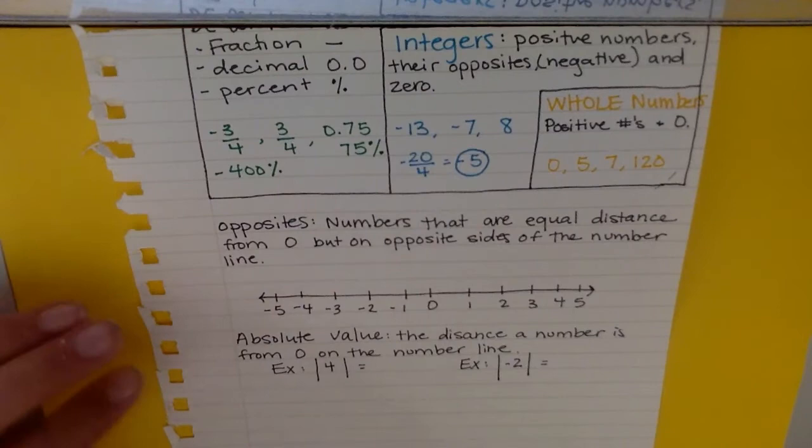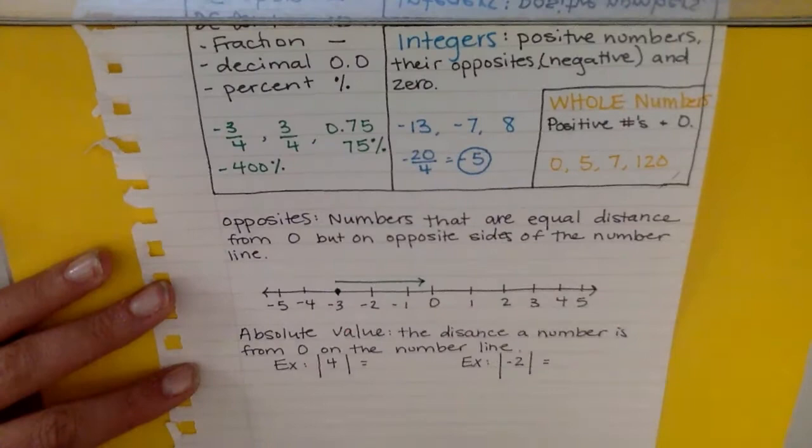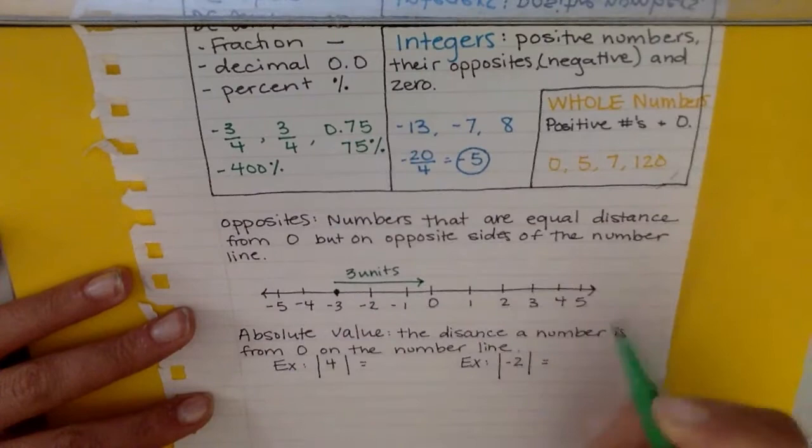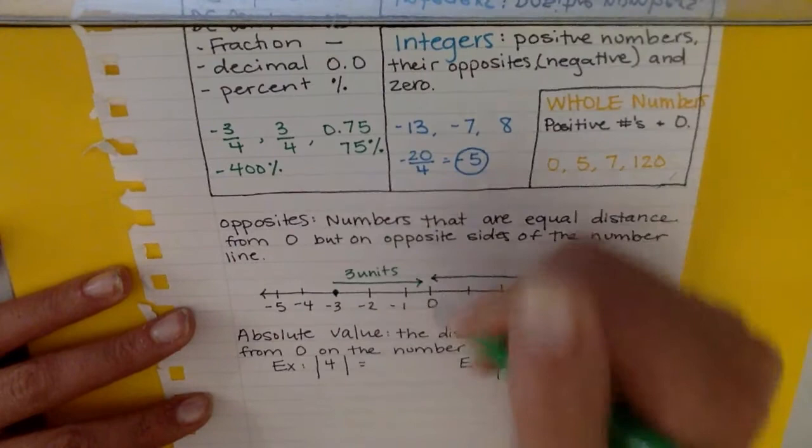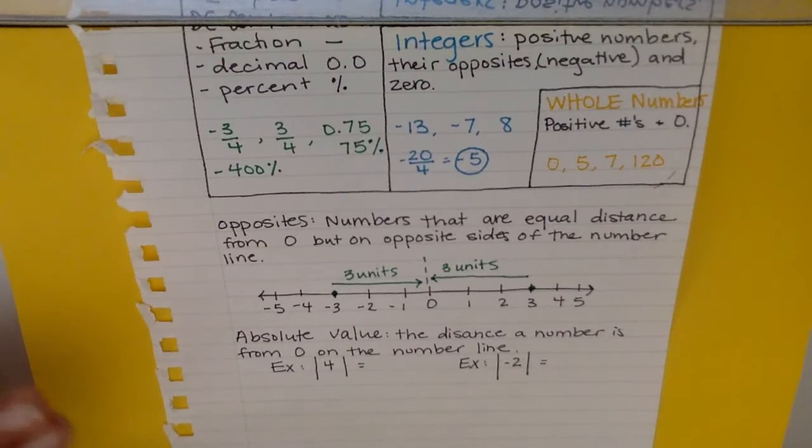So let's say for example I want to find the opposite of negative three. If I want the opposite of negative three, I can see that this is three spaces away from zero, so I need to move another three spaces on the opposite side of the number line and that point is going to be on positive three. So both are three units away.